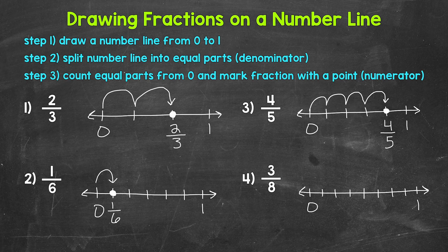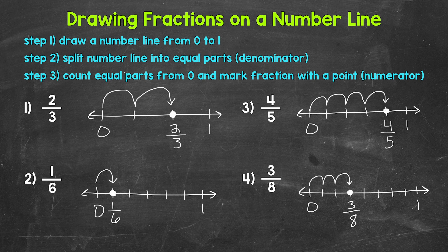Now we need to count and go over three equal parts — that's our numerator. So one, two, three. We went one-eighth, two-eighths, three-eighths. And we can mark and label our fraction: three-eighths. The distance between zero and one was divided into eight equal parts, and we went over three out of those eight equal parts to represent three-eighths.